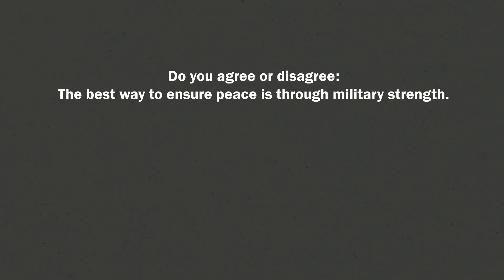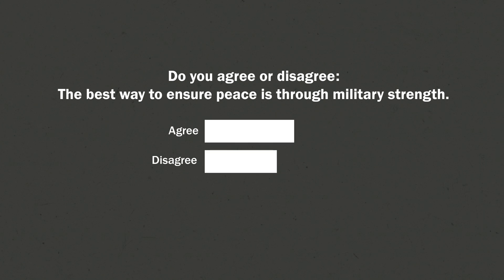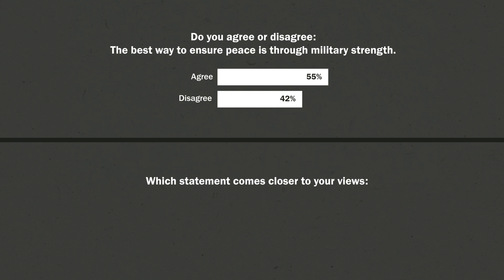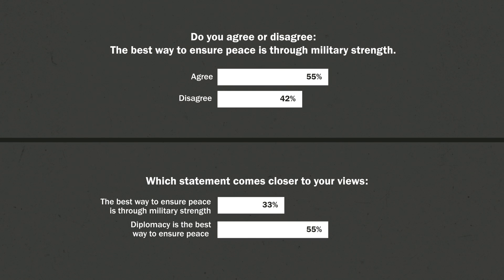Questionnaire designers also want to be wary of acquiescence bias, which is the tendency for people to simply be agreeable. Studies have shown that questions posed as yes-no or agree-disagree tend to overstate how much the public endorses something, because people's default position in conversation or surveys is to be nice and agreeable. So if you ask 'Do you agree or disagree? The best way to ensure peace is through military strength,' you will get a much higher share agreeing than if you offer two alternative statements: 'Which statement comes closer to your views? The best way to ensure peace is through military strength, or diplomacy is the best way to ensure peace.' This forced choice format doesn't offer the respondent the chance to simply say, 'Yeah, I agree.'